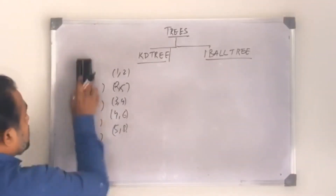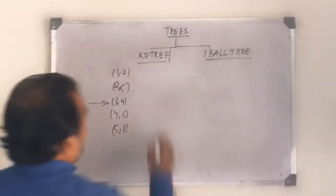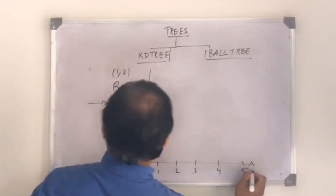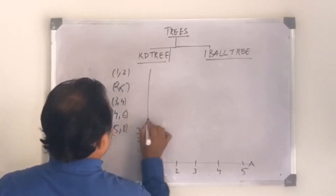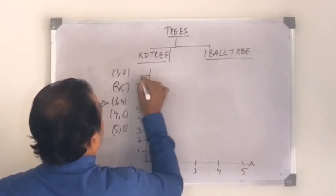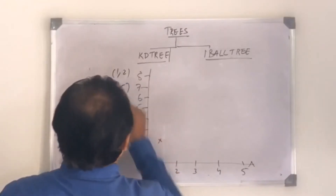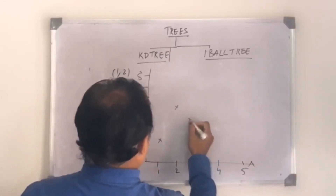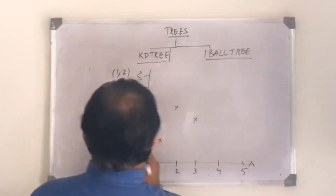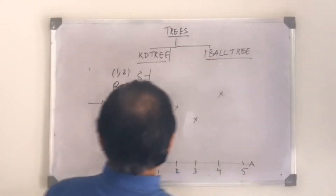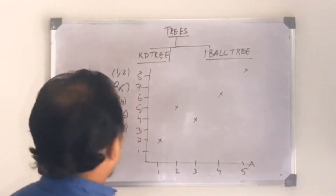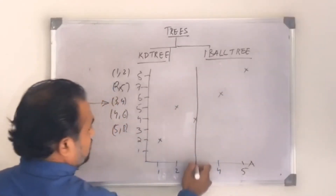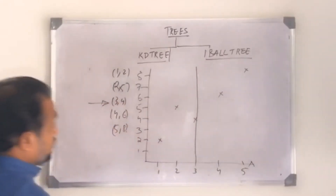The middle point with respect to X is 3. If I put this in a coordinate system, I have (1,2) somewhere here, (2,5) here, (3,4) here, (4,6) here, and (5,8) here. Since I've identified the median point, I'm going to cut this into two halves using 3 as the reference point. This gives me two branches of the tree.